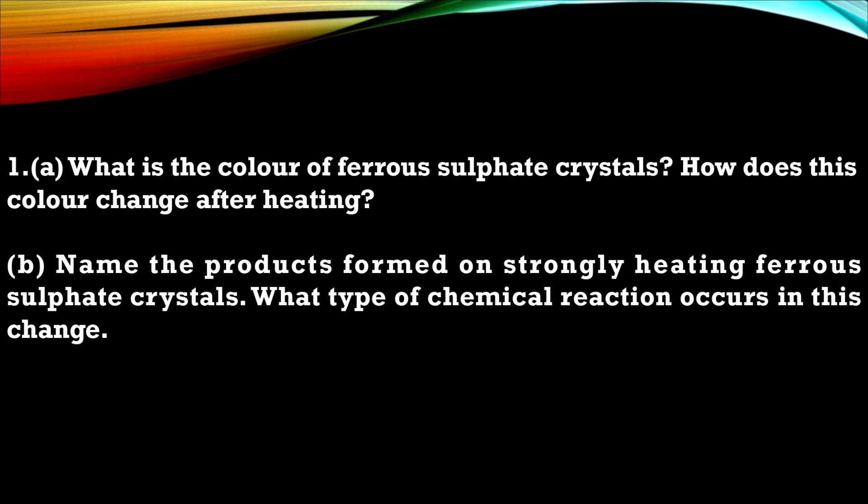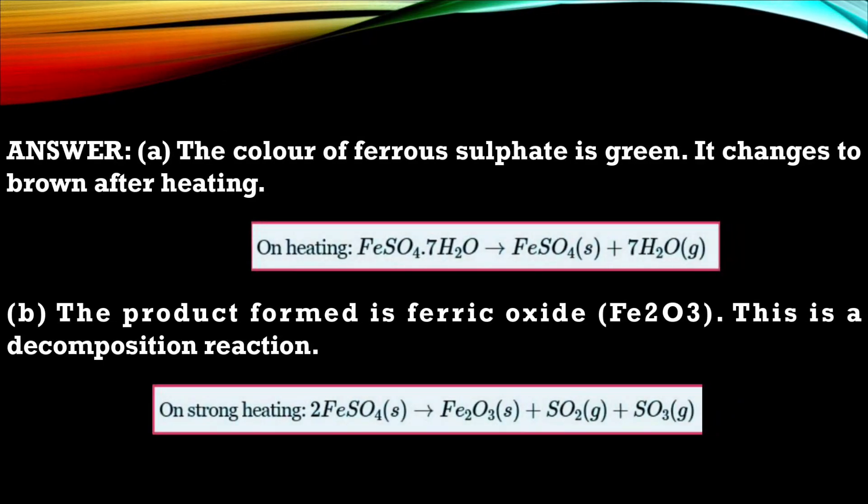First question is what is the color of ferrous sulfate crystal? How does this color change after heating? B. Name the product formed on strongly heating ferrous sulfate crystal. What type of chemical reaction occurs in this change? So here is the solution of this question and make sure you write your answer in point wise and this is the reaction.